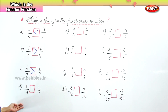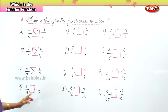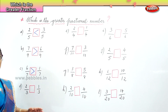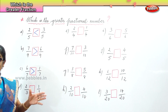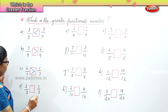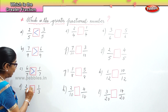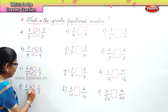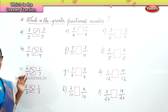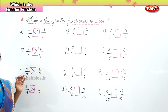Now let us go to the next one. We have the whole divided into three parts. We have two by three and one by three. The denominators are the same, so we look at the numerator — we have two and we have one. Two by three is bigger than one by three.